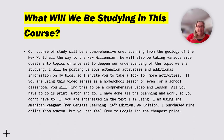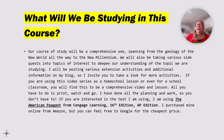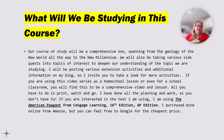I have done all the planning and work so you don't have to. If you are interested in the text I'm using, I'm using the American Pageant from Cengage Learning, the 16th edition, AP edition. I purchased mine online from Amazon, but you can feel free to Google for the cheapest price. I don't get any money from recommending these textbooks. I actually used the American Pageant when I was in high school — that was my AP U.S. history text. Since I'm familiar with how that text is laid out, I have just continued using it with the most updated edition.